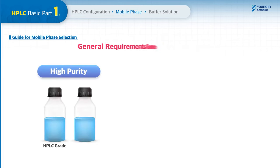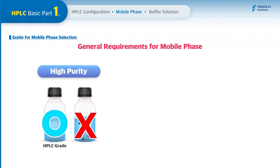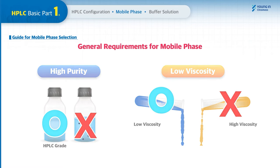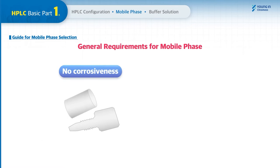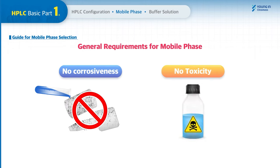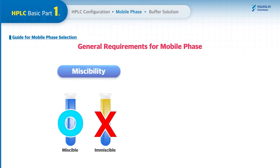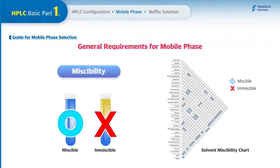There are general requirements for mobile phase that can affect selectivity. First, purity — all solvents should be HPLC grade to have minimal UV absorbance. Mobile phase viscosity should be as low as possible. Solvents must be non-corrosive to HPLC system components and must be considered with respect to health and safety risks. Solvents should be completely miscible with each other in all proportions.